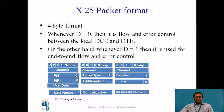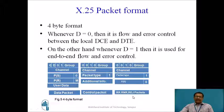This is the 4-byte format. It has a first byte, second byte, third byte and fourth byte. These 4 bytes correspond to the data packet, 4 bytes correspond to the control packet, and 4 bytes correspond to the RR, RNR and REJ packets. In this format, the group is 4-bit and channel is 8-bit, so a total of 12-bit local channel number can be created.